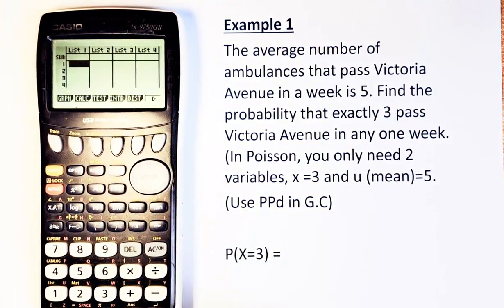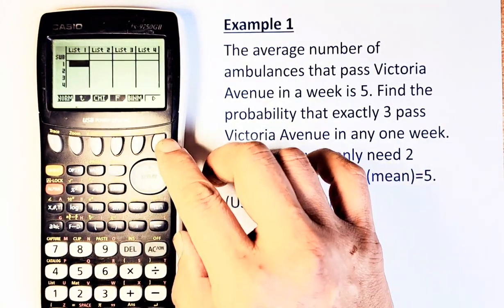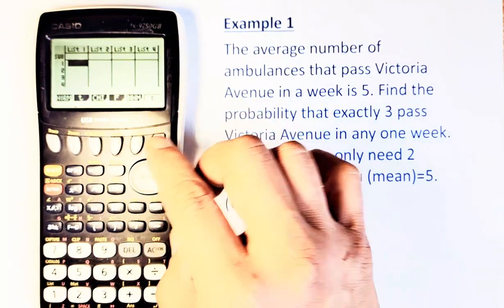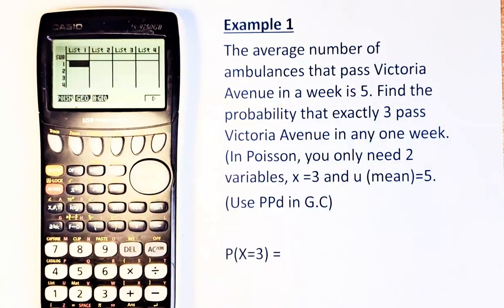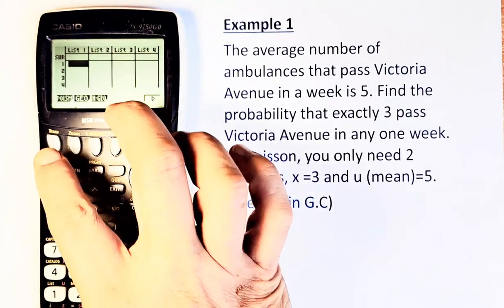Now you go to Distribution, which is F5. Now, there's no Poisson there, so you have to press the F6 button. There's an arrow there to show that there's more distributions. So F6, you go on, and then now you see Poisson, P-O-I-S-N, then you press F1.